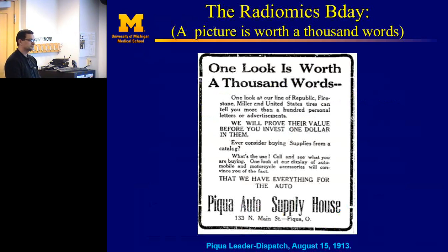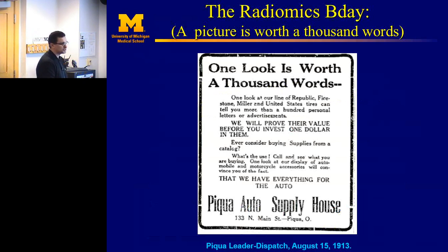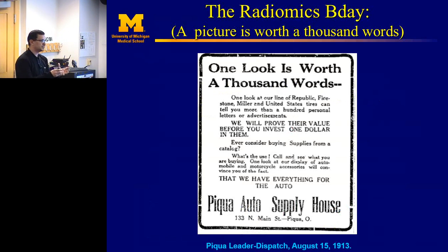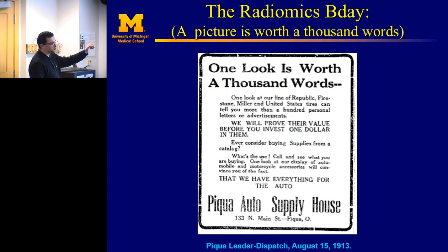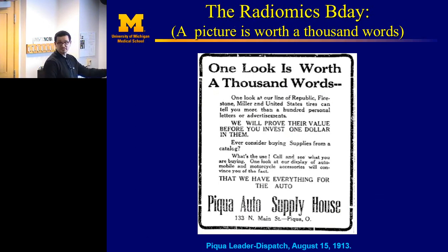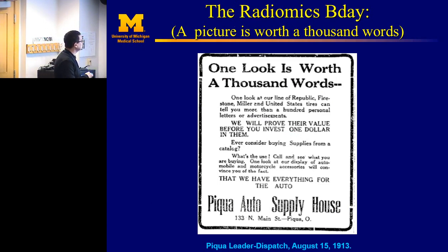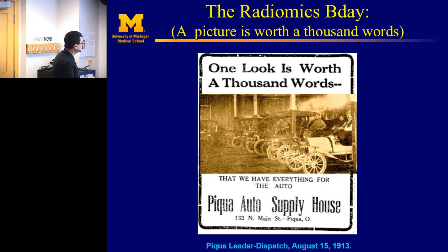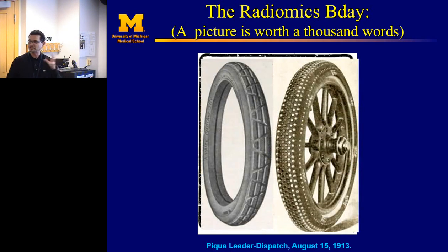What does decoding mean? You can use certain imaging to look at hypoxia, metabolic activity, and other kinds of activity. Instead of just looking at intensity, you can look more at what the image is actually saying — look at heterogeneity information. The history of doing these kinds of studies is about a hundred years old, started by someone who liked to sell tires — he had one look worth a thousand words. What they were looking at were textures, which are patterns that separate different types of tires for different seasons.